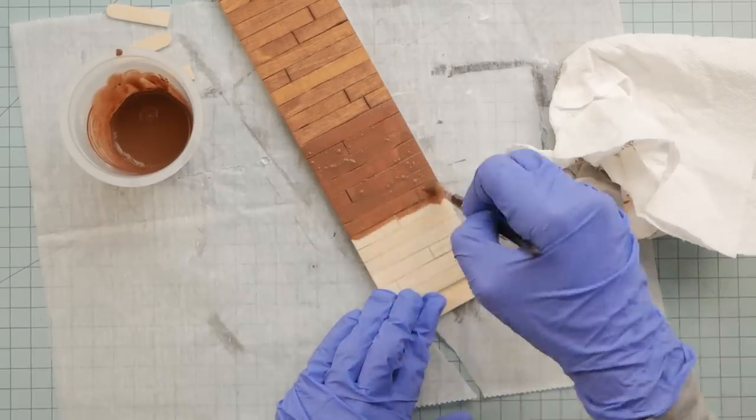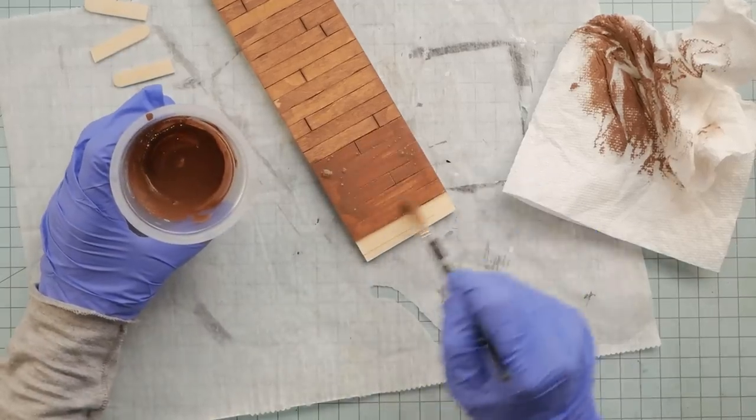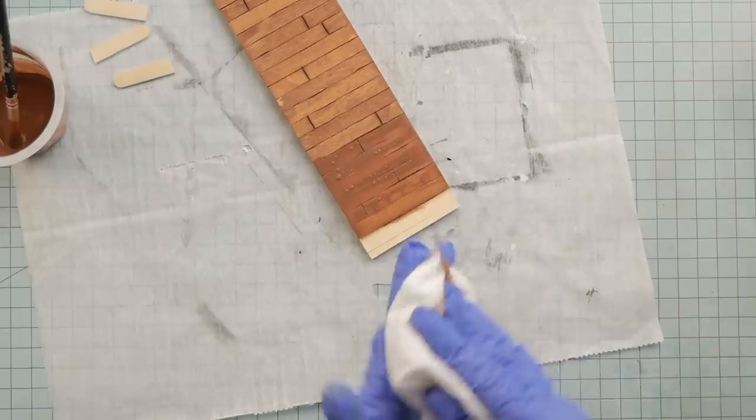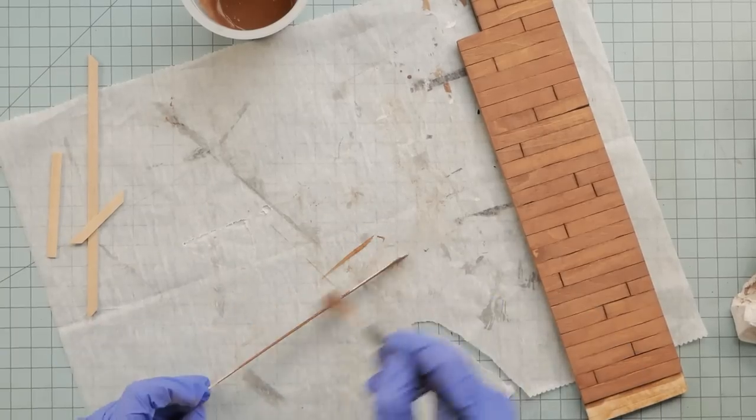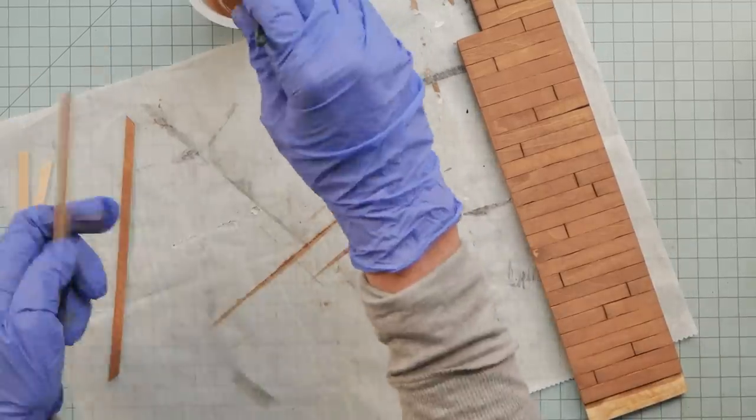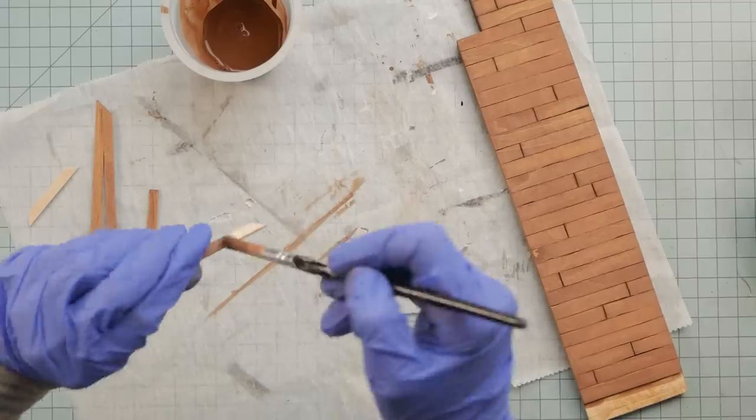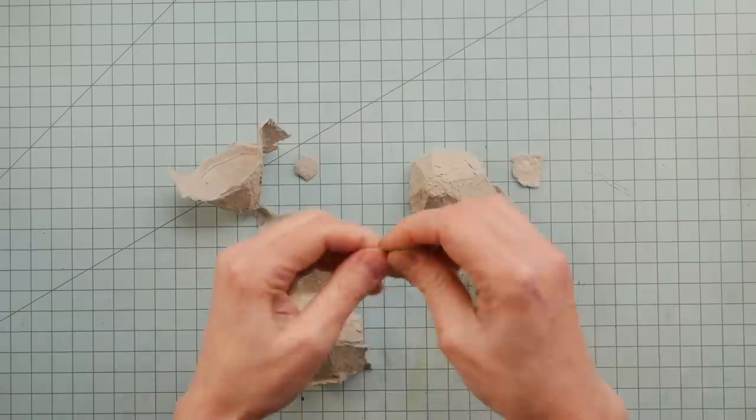But you don't have to worry about using stain. And because it's acrylic paint, it dries really, really fast. And while I'm at it, I have some little trim boards because I'm going to be making a window. So I'm going to go ahead and get those stained while I've got this paint ready.